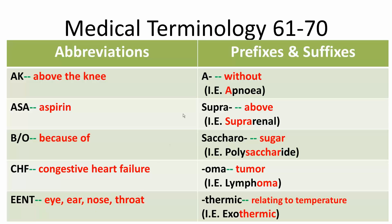Now for the prefixes and suffixes. The prefix A means without — for example, apnea is the temporary suspension of breathing. Supra means above — for example, suprarenal means above the kidney.